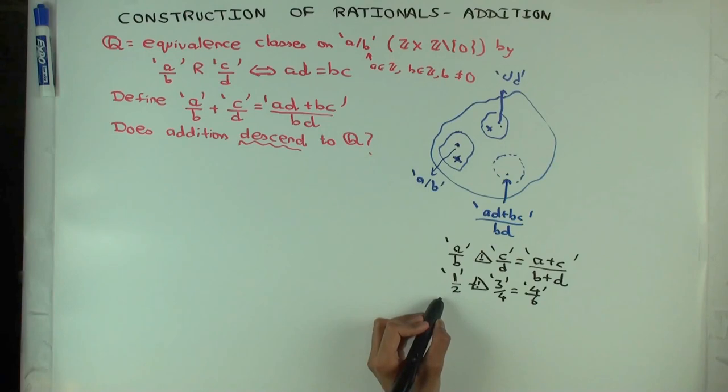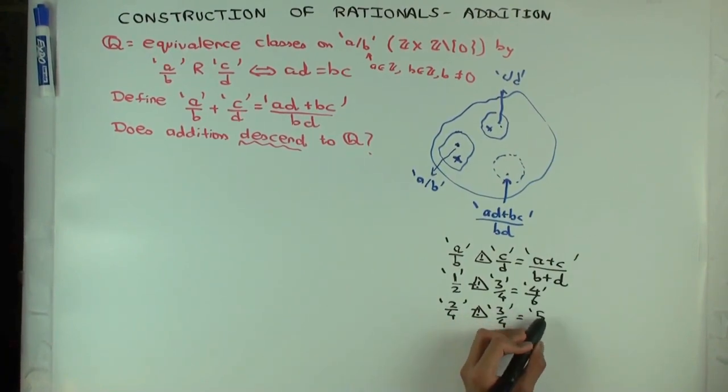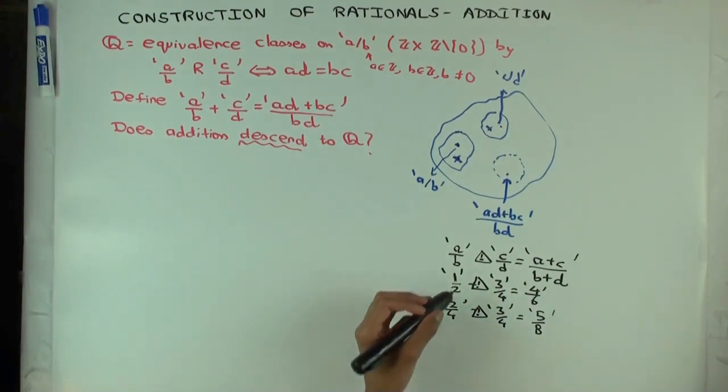But now, if I change the half to, let's say 2 over 4, plus 3 over 4 is 5 over 8. And you can check that these two numbers are not equal as rational numbers, even though the starting pairs are equal as rational numbers.